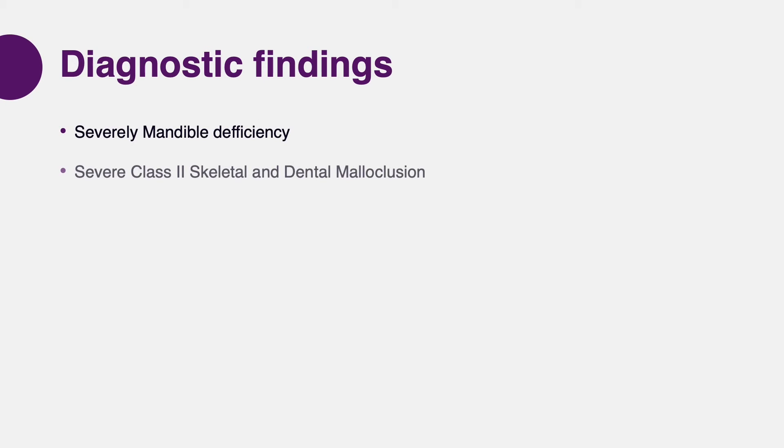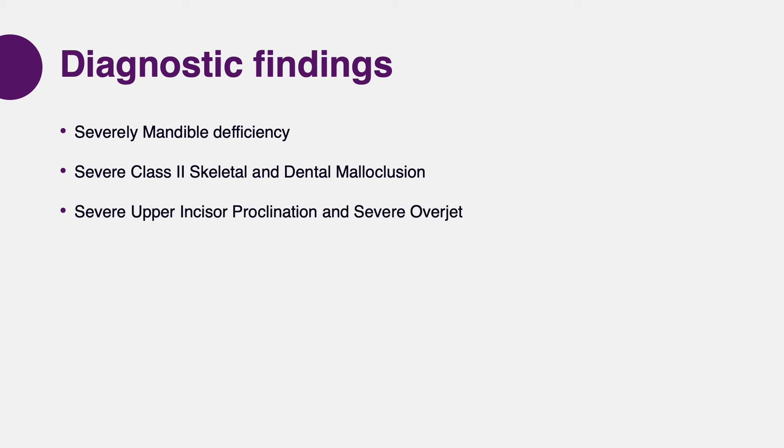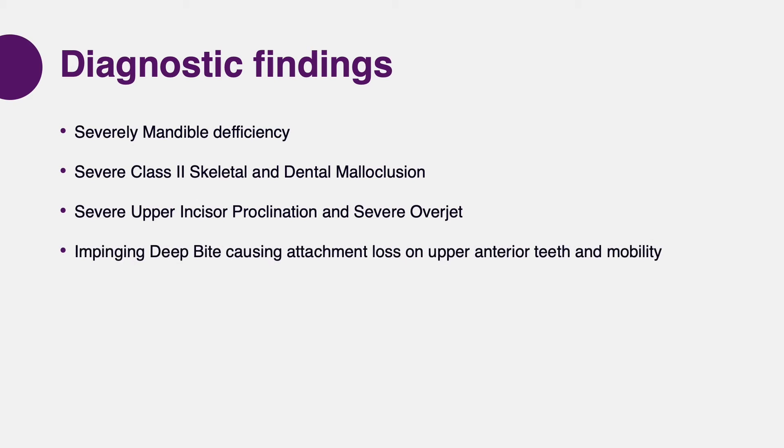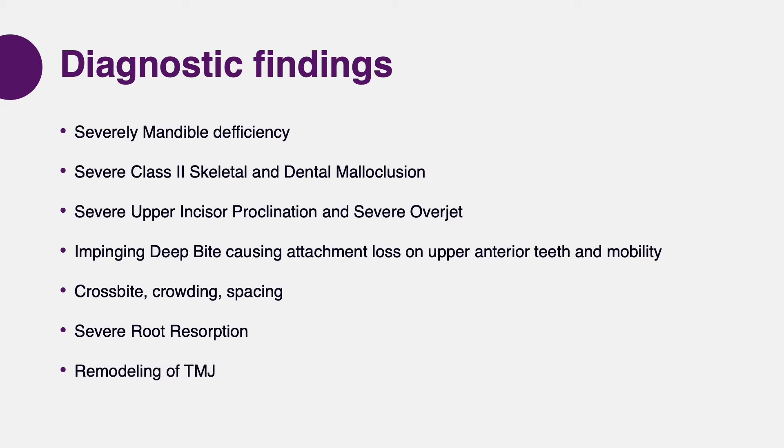A patient was referred to CITOR Clinic due to the complexity. Upon exam, we noticed that this young lady had severe mandibular deficiency, severe proclination of upper anterior teeth causing an overjet of about 15 millimeters, a severe deep bite, and an impinging bite that was causing attachment loss on upper anterior teeth and mobility of the four anterior teeth. This was pushing the dentist to consider extracting these teeth and placing implants. The patient also had other common orthodontic problems such as crossbite, crowding, and spacing in some areas.